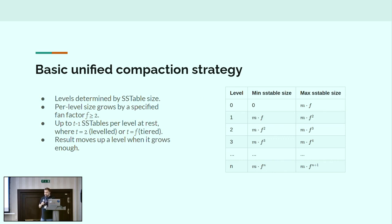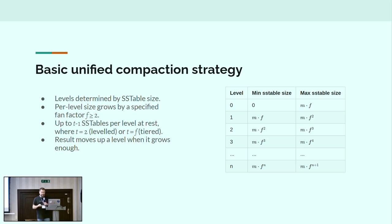We can start by looking at the sizes of SSTables, split them into levels based on their size — specifically, what power of the fan factor their size is relative to the minimum SSTable size. Once we group them into levels, we check how many there are on each level. If we find too many — where too many is 2 for leveled compaction or fan-factor-many for tiered compaction — then we start doing a compaction.